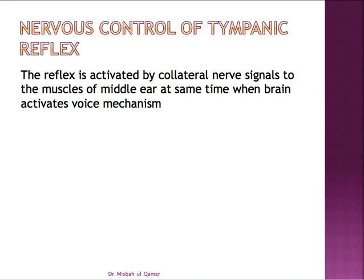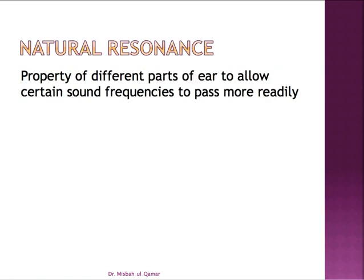Natural resonance is the property of different parts of the ear to allow certain sound frequencies to pass more readily. The external auditory canal has a natural resonance of 2500 to 3000 Hz, the tympanic membrane has a natural resonance of 800 to 1600 Hz, and the ossicular chain carries a natural resonance of around 500 to 2000 Hz.